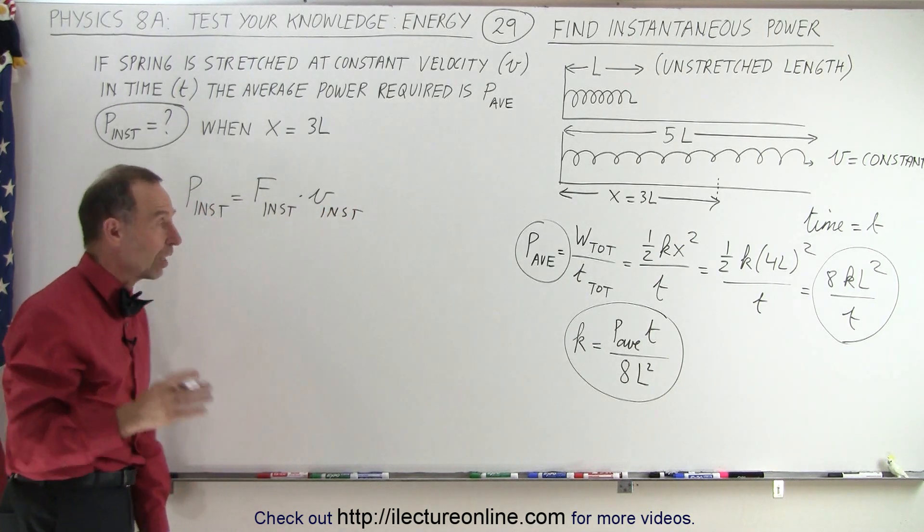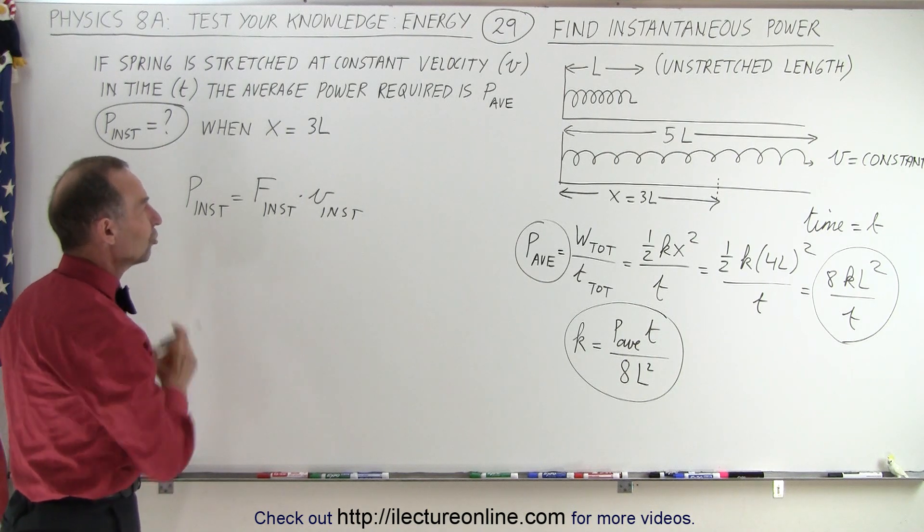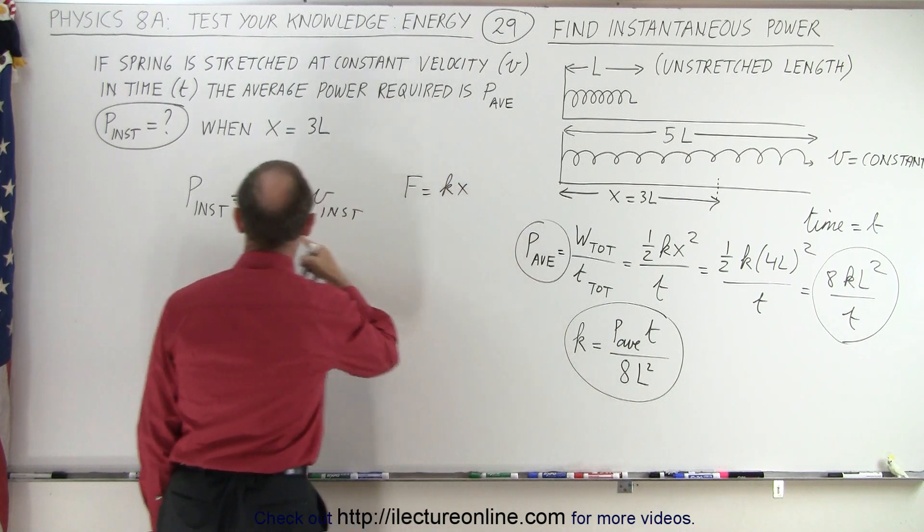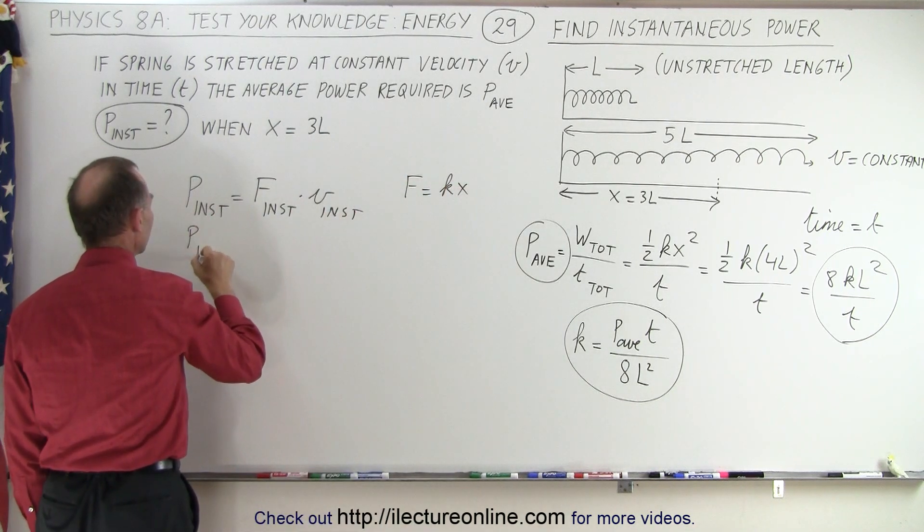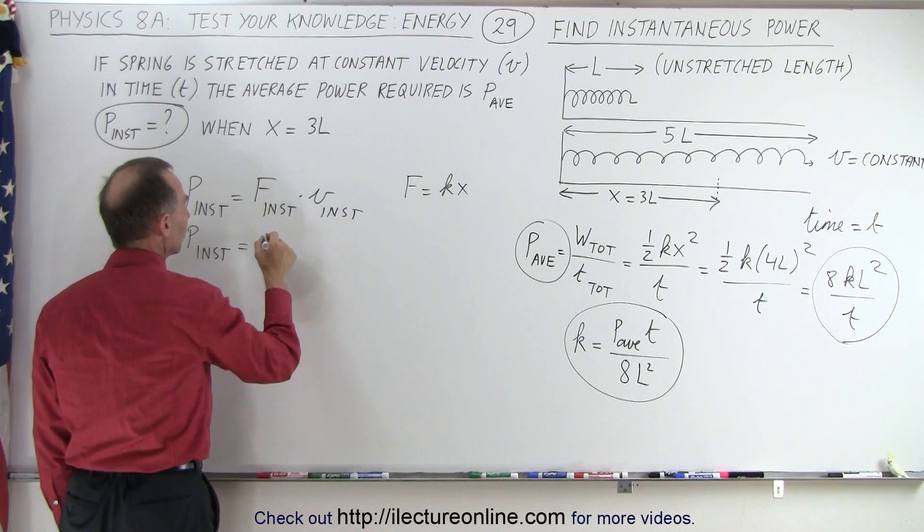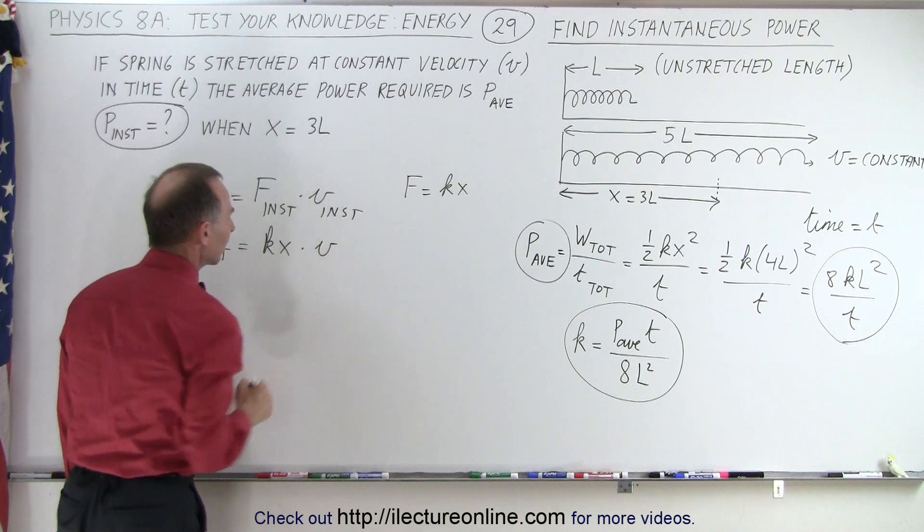But of course in this case, the velocity is constant, so that doesn't change. But the force changes, because the force is going to be equal to K times X. So in this case, we can say that the instantaneous power is going to be the force, that would be K times X times V, V being a constant.